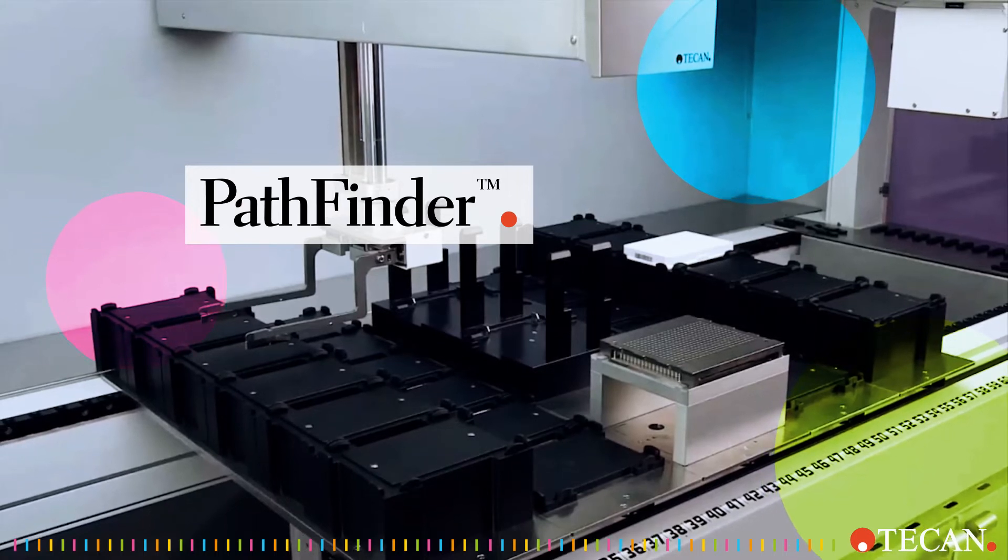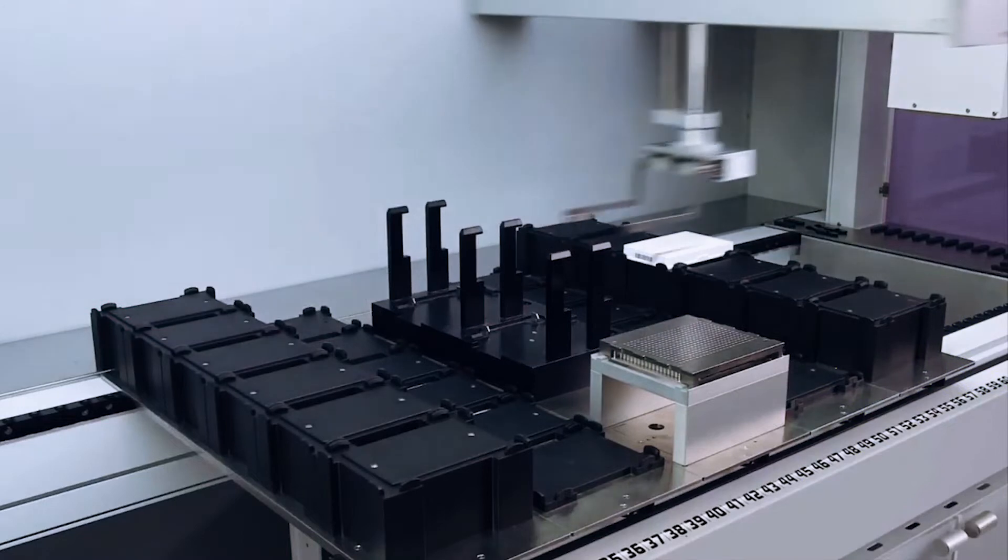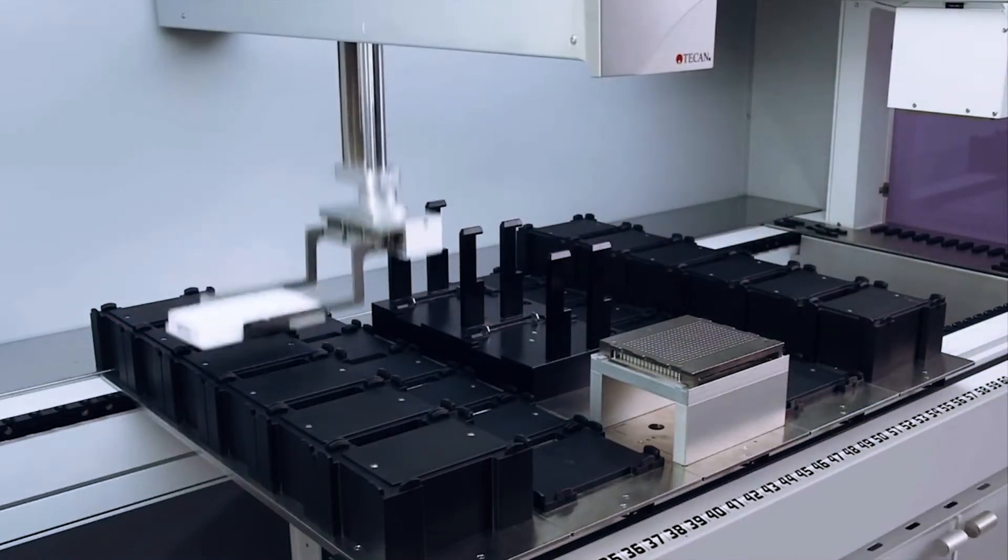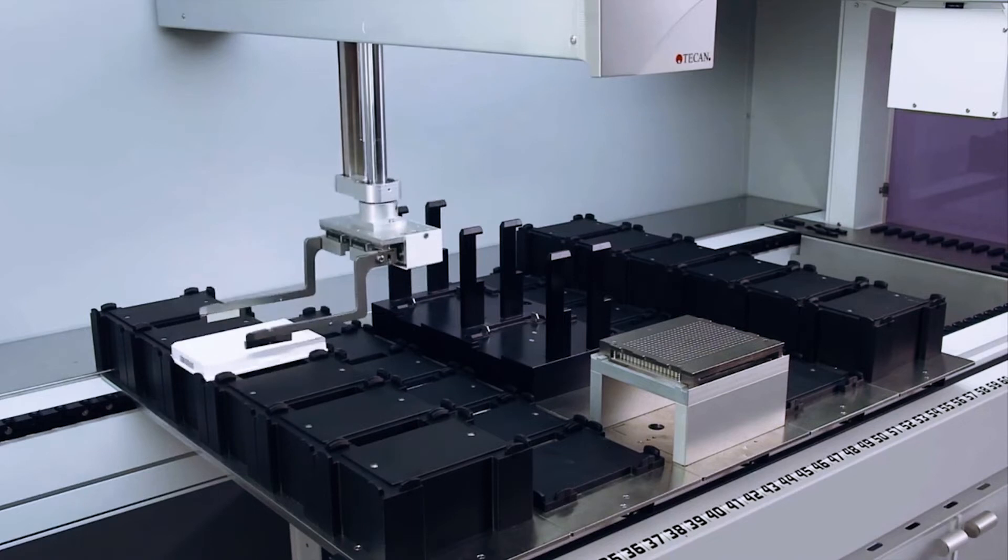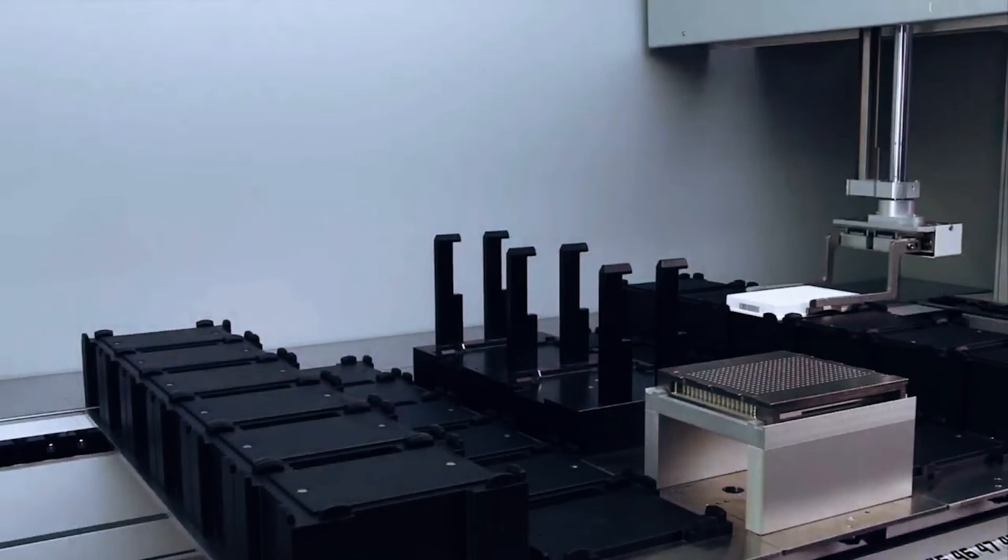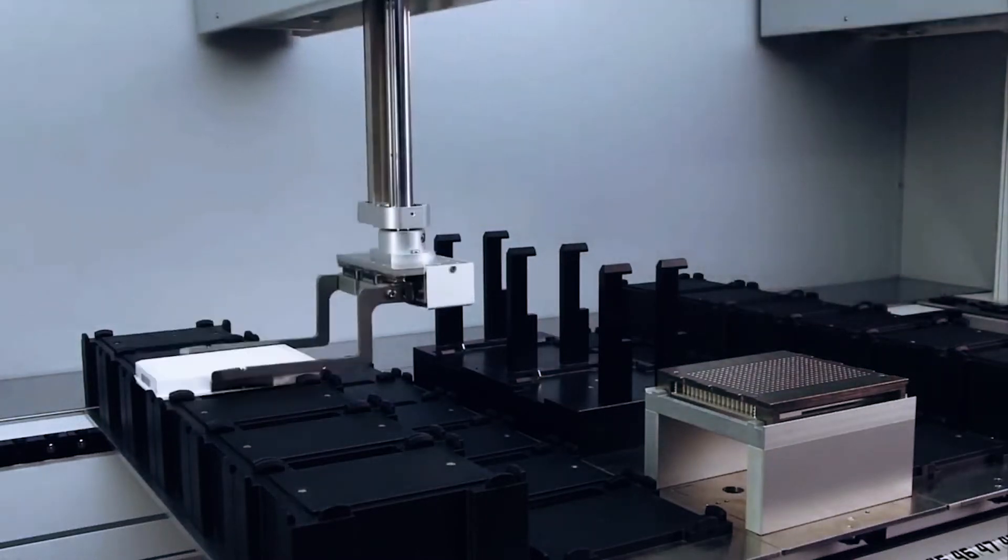This video gives you a quick overview of Pathfinder. Pathfinder automatically uses the fastest and most efficient route for every movement. Obstacles are detected and the arms move around them. That's why it's very important that the work table in Fluent Control represents the real work table.